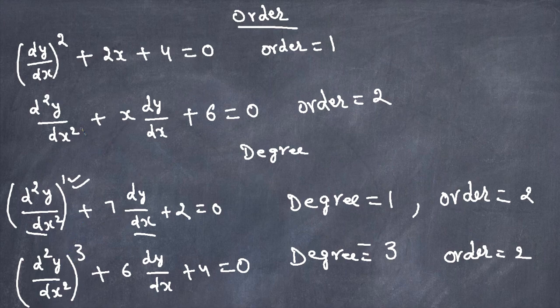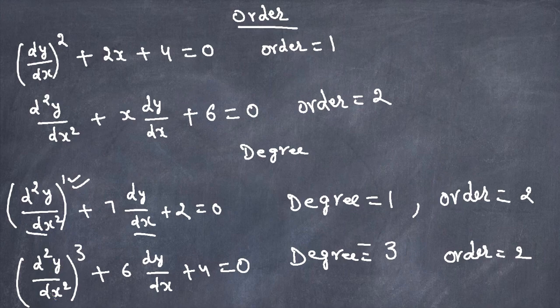So to recap: order is about what derivative it is — first derivative gives order 1, second derivative gives order 2. Degree is the power of the highest derivative. In the first example the degree was 1, and in the last example the power of the highest derivative was 3, so the degree was 3.